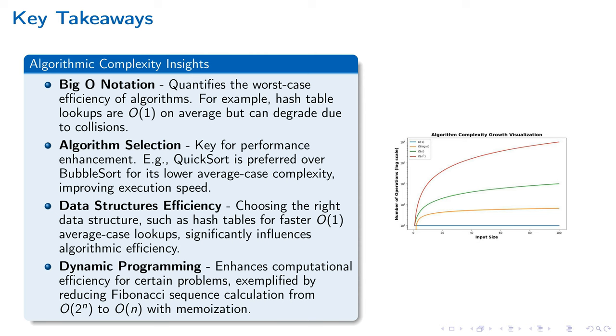Dynamic programming transforms the approach to solving complex problems such as the Fibonacci sequence by converting an exponential time complexity problem into a more manageable linear time complexity one. By storing the results of sub-problems and reusing them, it prevents redundant calculations, leading to much more efficient algorithms. This technique exemplifies the powerful impact of strategic algorithm selection and optimization on computational efficiency.